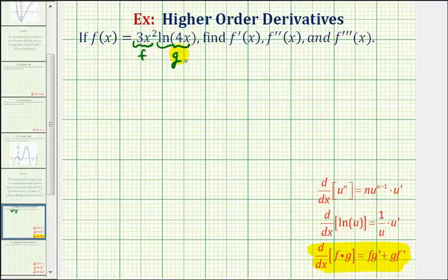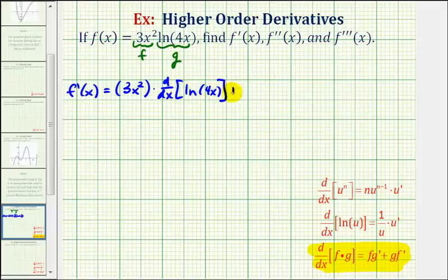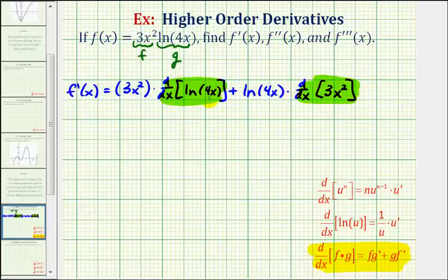So let's start by writing out the product rule to find the first derivative. We'll have f prime of x equal to f times g prime plus g times f prime — the first function times the derivative of the second function, plus the second function times the derivative of the first function. Notice how we haven't found any derivatives yet; we wrote out the product rule, so now we'll go back and find the derivatives and then find the product and hopefully simplify.